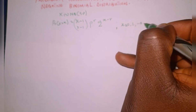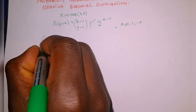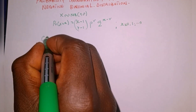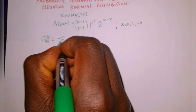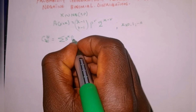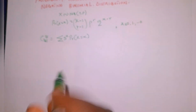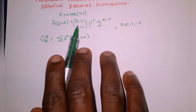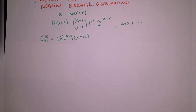The next thing we're going to do — remember we are looking for the probability generating function, which is denoted as G sub X of s, equal to the summation of s raised to the power of x multiplied by P(X = x). We know that P(X = x) is the same as this negative binomial function.